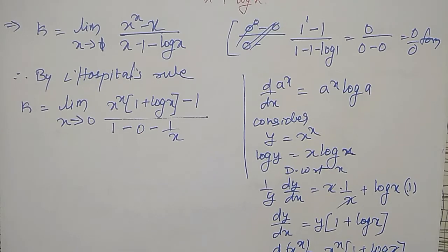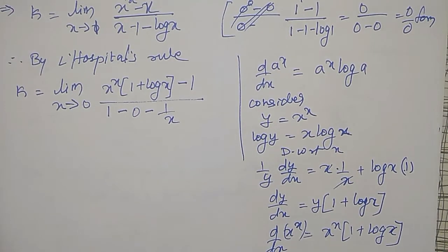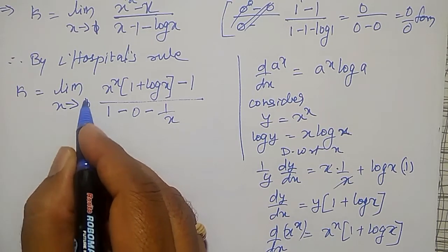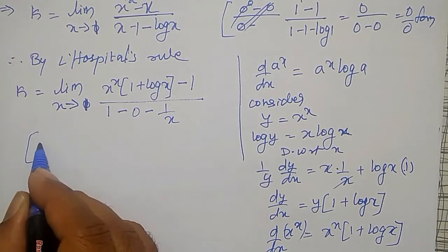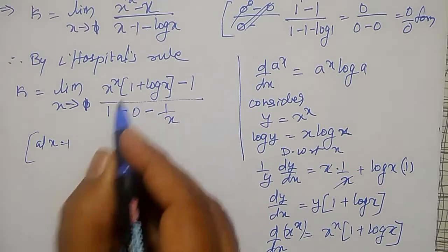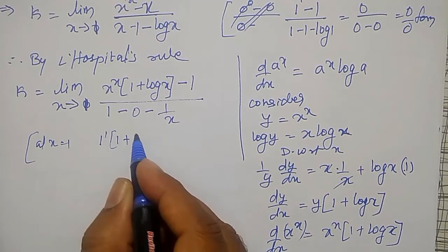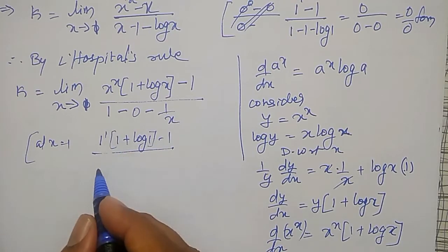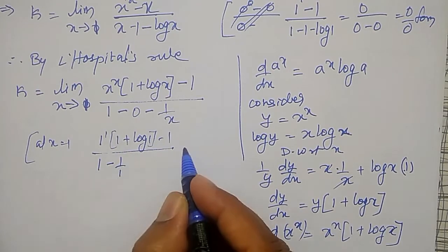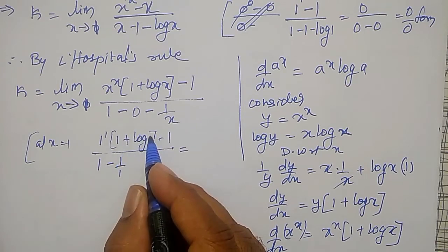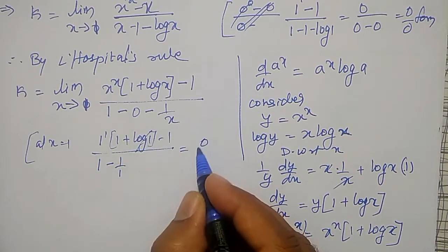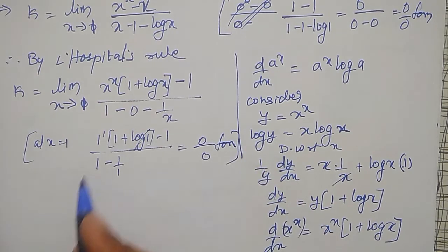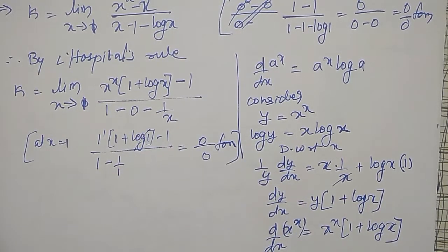Again, let me check whether I am getting 0 by 0 form or a finite value. At x equal to 1: 1 raised to 1 into 1 plus log 1 minus 1, divided by 1 minus 1 by 1. That is log 1 is 0, so 1 minus 1 is 0, divided by 0. Again 0 by 0 form. So after differentiating I am still getting 0 by 0 form.